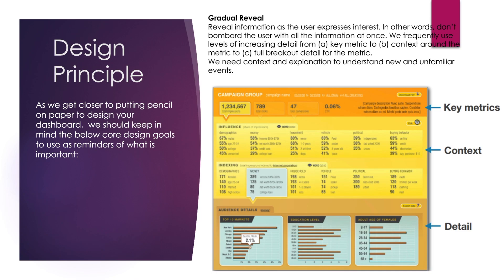Moving on to the defining principles — as we get closer to putting pencil on paper to design a dashboard, while drafting a sketch we should keep in mind some key principles. The first one is gradual reveal: revealing information as the user expresses interest is really important. In other words, we should not bombard the users with all the information at once; we should reveal it slowly and gradually, from the key metrics, then telling the story and context of those metrics, and then showing the full detail at the end.